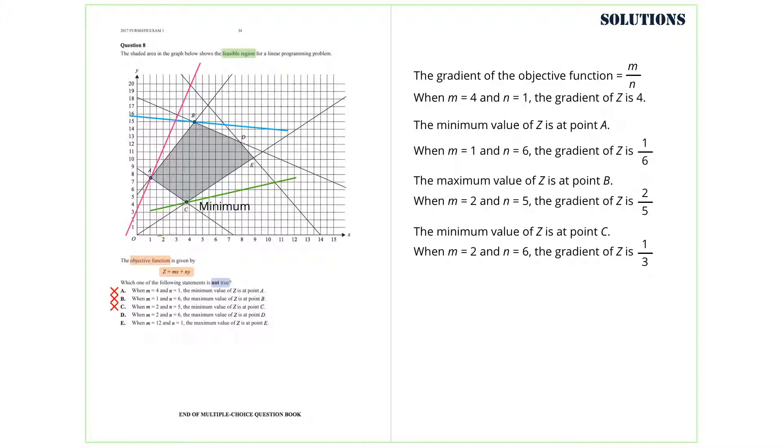When M equals 2 and N equals 6, the gradient of Z is 2 over 6 or 1 over 3. Here is the line with gradient 1 over 3 and its maximum value occurs at point B. So, this option is not true, so the answer to this question is option D.